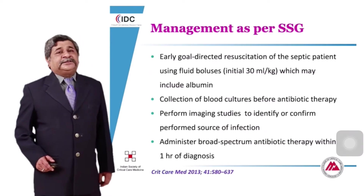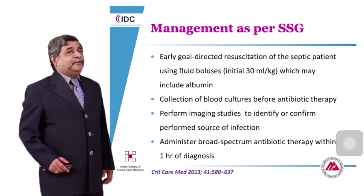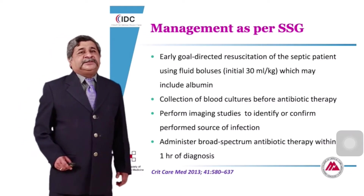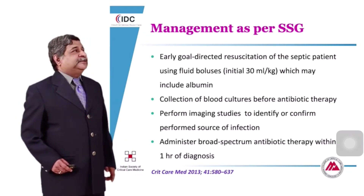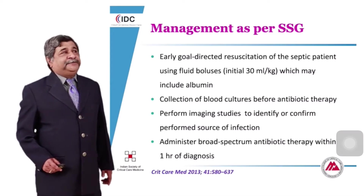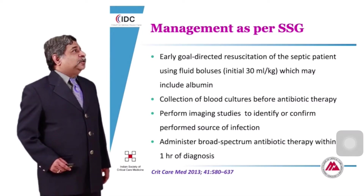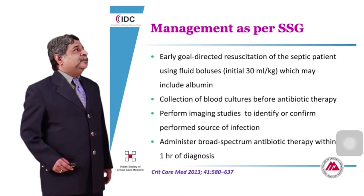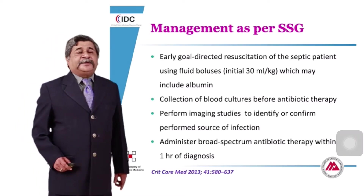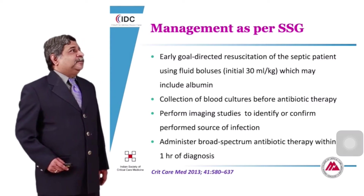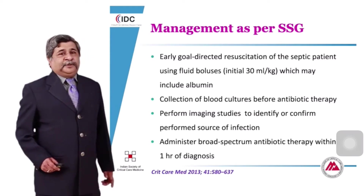How do you manage sepsis in general? We will have a brief overview as per the Surviving Sepsis guidelines on how to manage a patient with severe sepsis and septic shock. The executive summary says that early goal-directed resuscitation of the septic patient using fluid boluses — the initial bolus may be 30 ml per kg, which may include albumin.